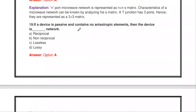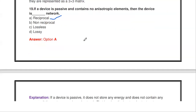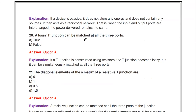Next question: if a device is passive and contains no anisotropic elements, then the device is a blank network. If the device is passive and contains no anisotropic elements, it is a reciprocal network.